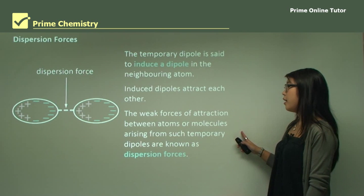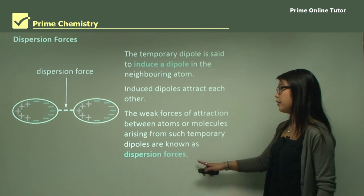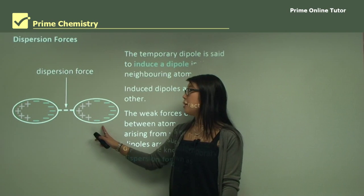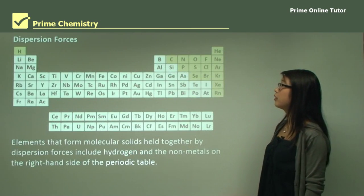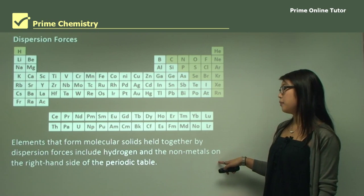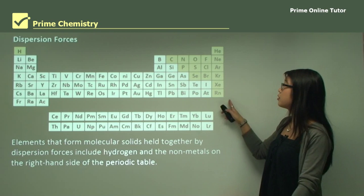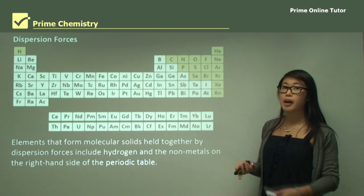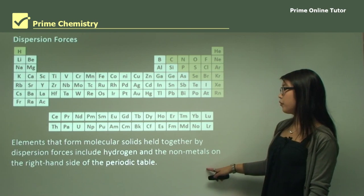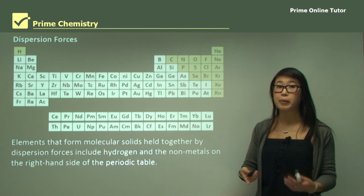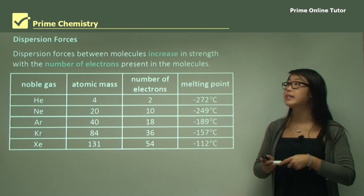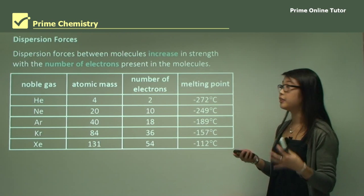Dispersion forces are quite weak, but they arise from temporary dipoles. They're not as strong as dipole-dipole forces, but there's at least a little attraction between molecules. Dispersion forces generally happen when molecules are non-polar and are held together by nothing else. The ones on the right-hand side of the periodic table — the non-metals — are mainly due to dispersion forces. Dispersion forces between molecules increase in strength with the number of electrons present in the shells of the molecules.